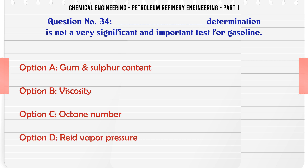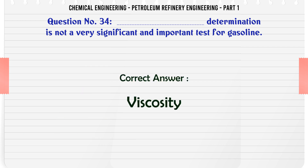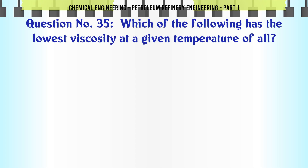Which determination is not a very significant and important test for gasoline? A. Gum and sulfur content, B. Viscosity, C. Octane number, D. Reid vapor pressure. The correct answer is Viscosity.